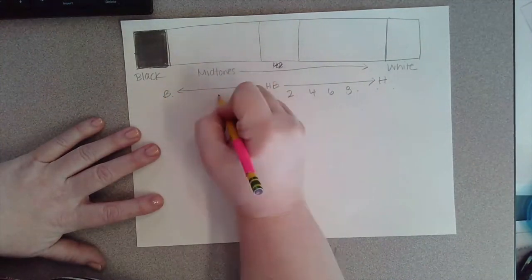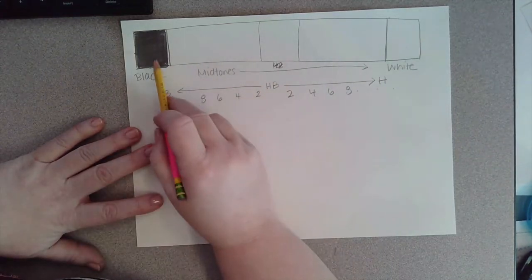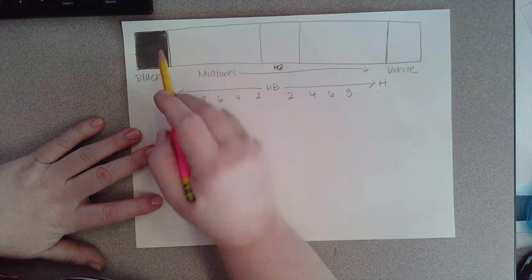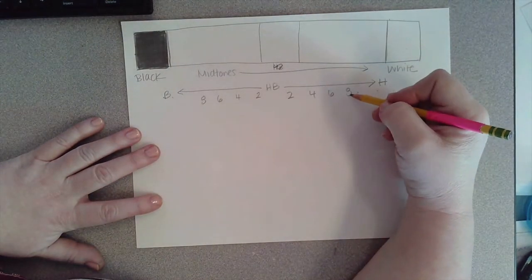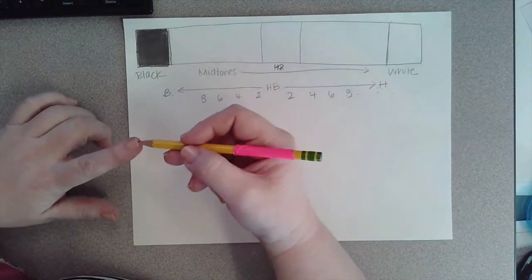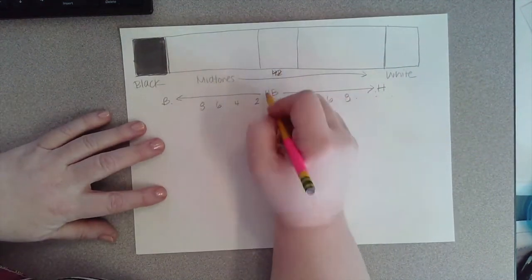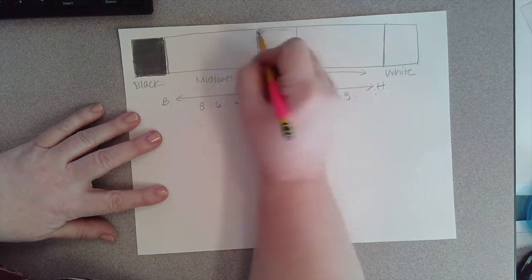If you want to go darker, you get into the B pencils, and they also go 2, 4, 6, 8. So if you have an 8B pencil, it's going to draw much darker than this—you're going to get a really dark black—compared to an 8H, which is going to give you a really light pencil because your pencil lead is so hard. Our HB is right here in the middle, and we're going to give that gray in here.